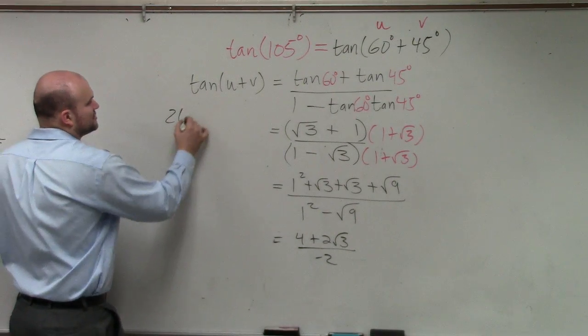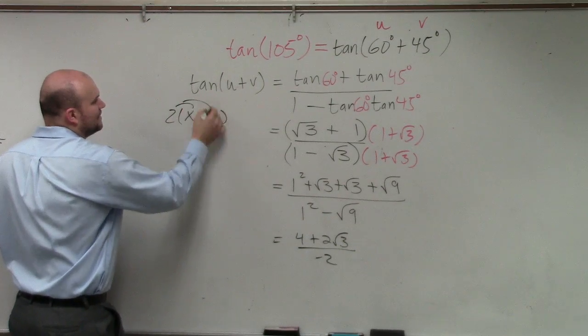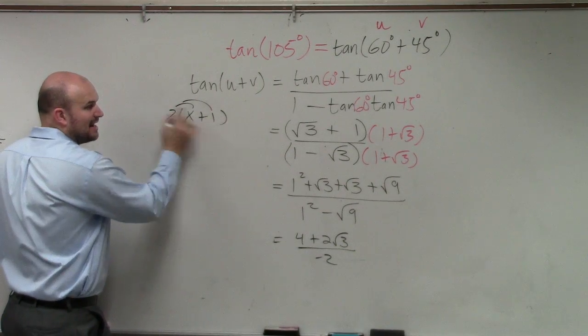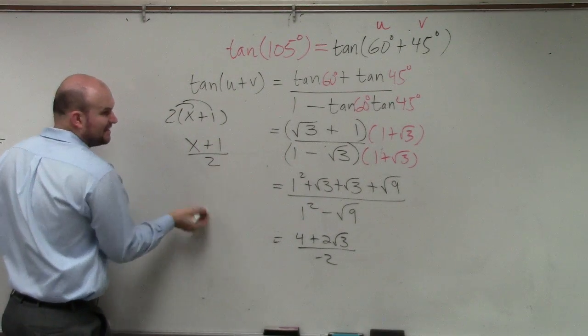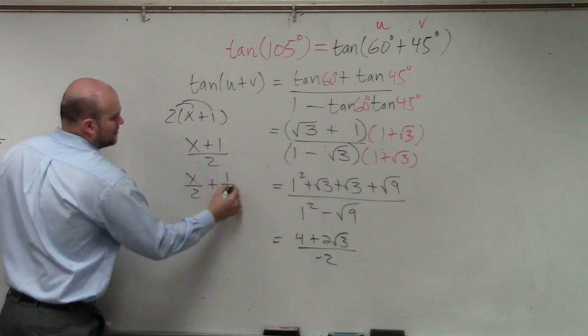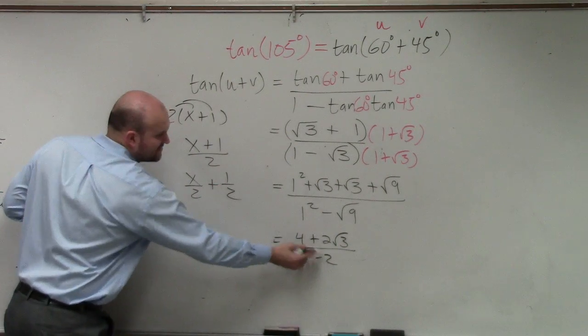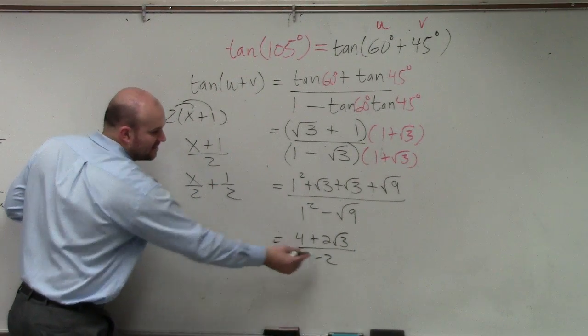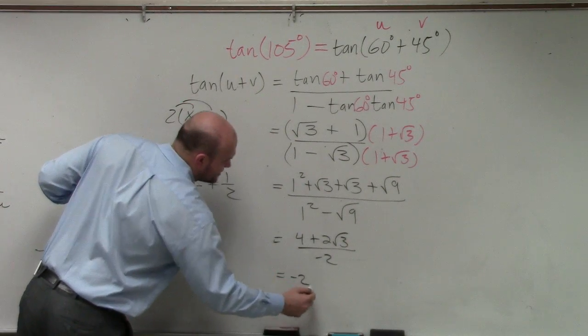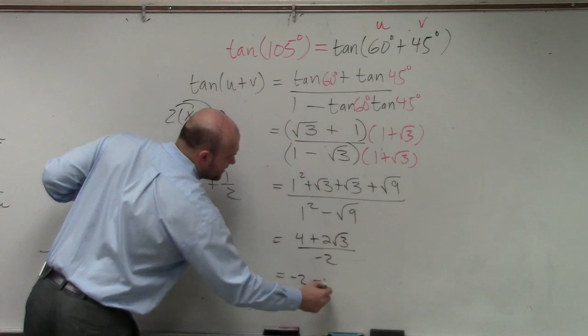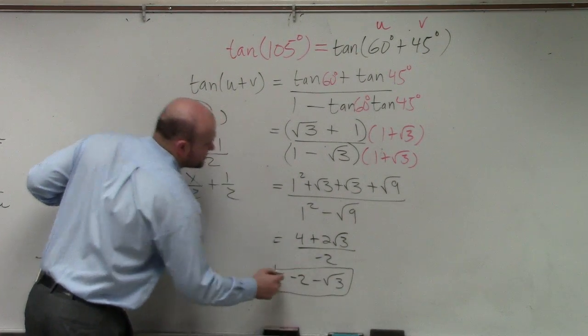Then, if you guys remember, distributive property. Distributive property says whenever you have a number outside a binomial, you distribute. Well, ladies and gentlemen, that's the same thing for division. So if I have this negative 2 divided into both of these, I divide the negative 2 into both of them. 4 divided by negative 2 is negative 2. 2 divided by 2 is negative 1. So if I have this negative 1, there is my final answer.